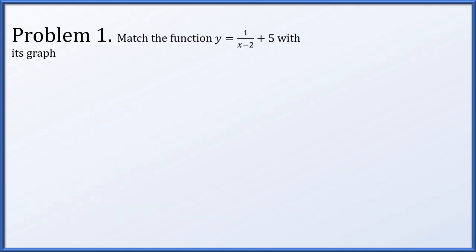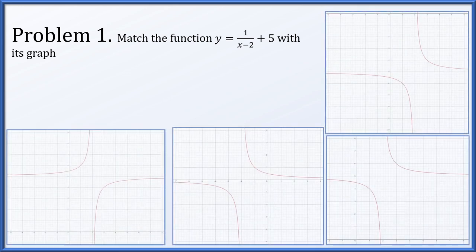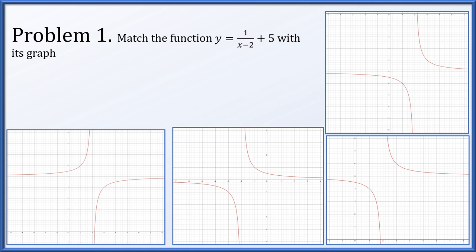In problem one, we're asked to match the given function y = 1/(x-2) + 5 with its graph. We need to determine which option matches. The first thing I'd like to do is rewrite it as a single fraction. We give the term 5 the common denominator of x minus 2. This simplifies as (5x - 9)/(x - 2).